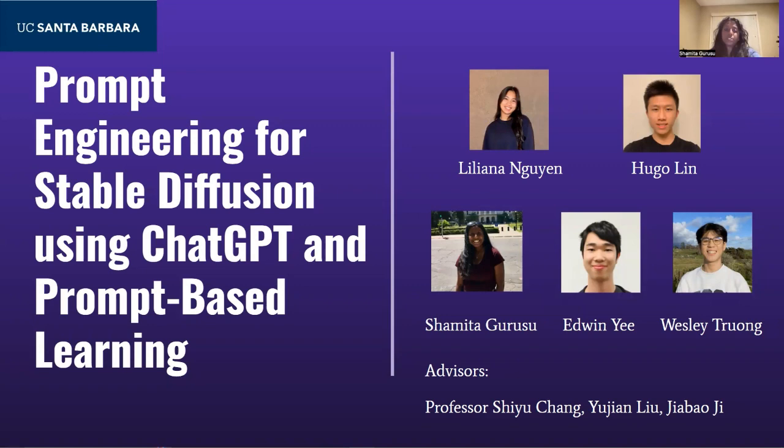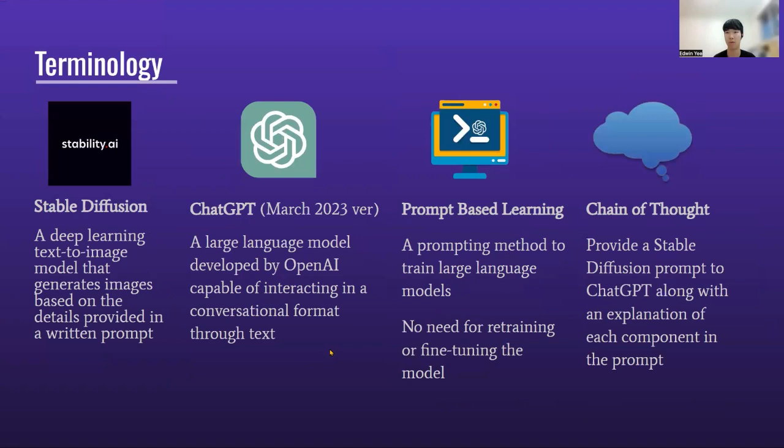First, we will go over some of the key terminology that we use in this presentation. The first is Stable Diffusion, which is a deep learning text-to-image model that generates images based on the details provided in a written prompt.